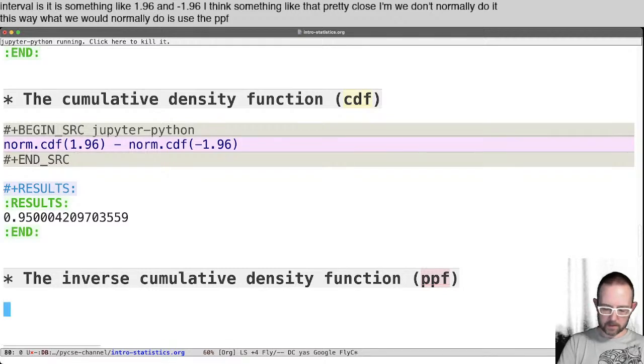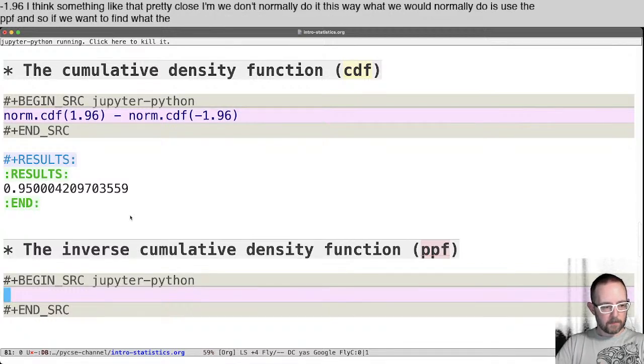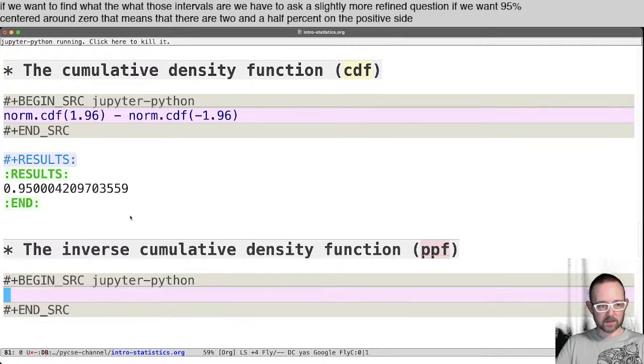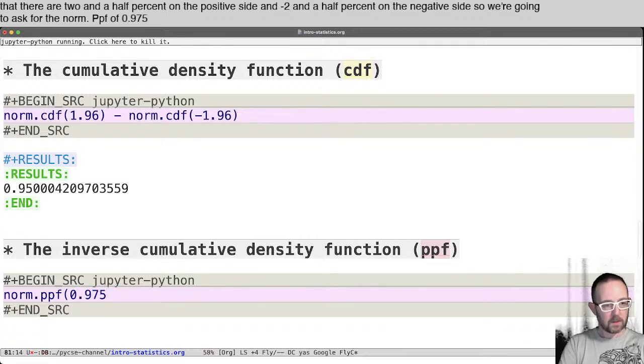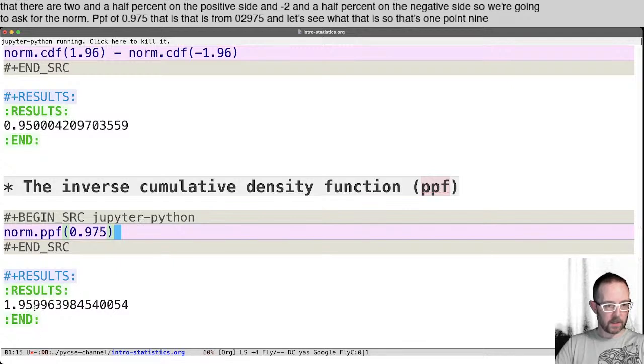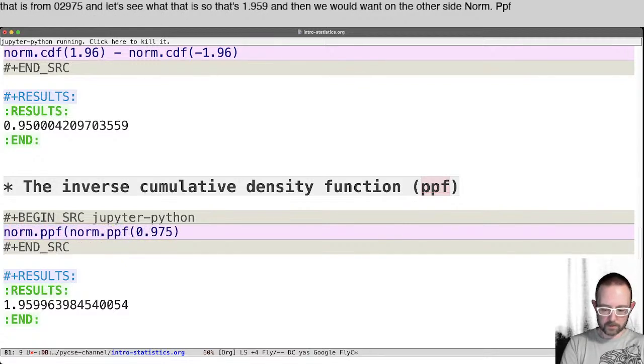We don't normally do it this way. What we would normally do is use the PPF. And so if we want to find what those intervals are, we have to ask a slightly more refined question. If we want 95% centered around zero, that means that there are two and a half percent on the positive side and two and a half percent on the negative side. So we're going to ask for the norm.ppf of 0.975. That is from zero to 0.975. And let's see what that is. So that's 1.959. And then we would want on the other side, norm.ppf of 0.025.